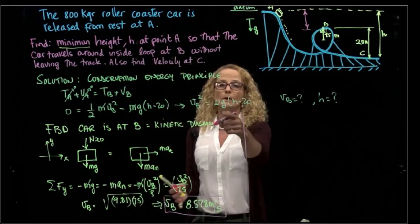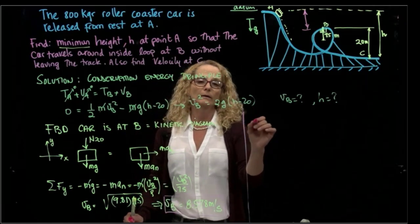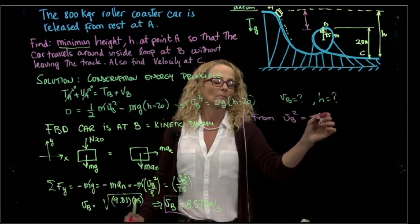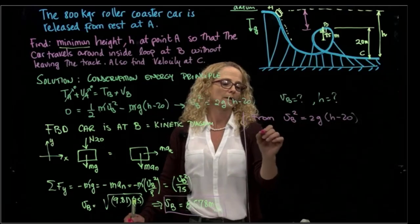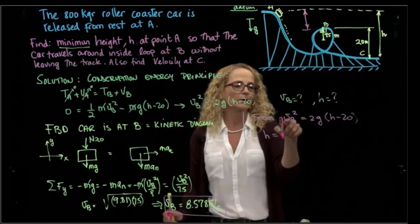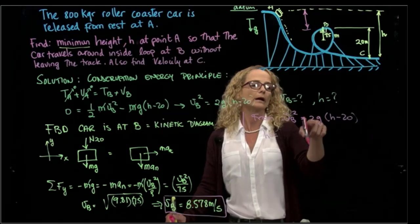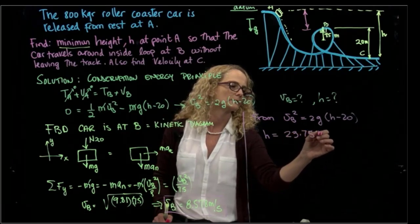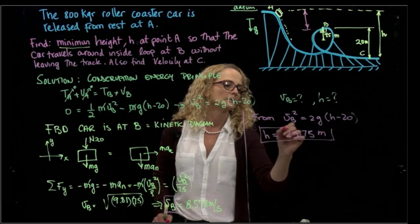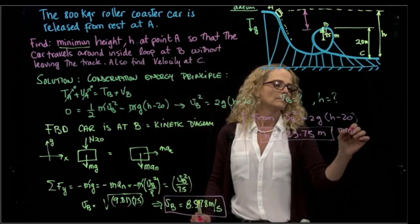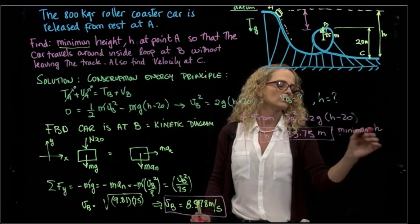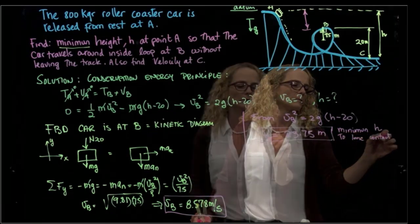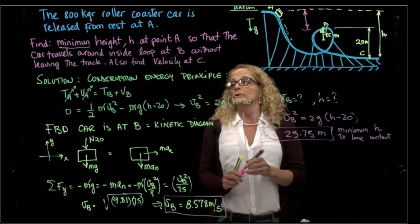So now, I go back to my first equation. Now that I have a velocity at B, then from this equation, I can solve for h. So h will be equals to, so I plug in my velocity, I plug my acceleration, and I add 20, and my height is 23.75 meters. So that's the minimum h to lose contact. So that's the minimum. So that was my first part.